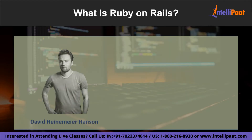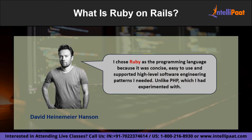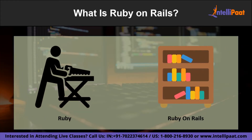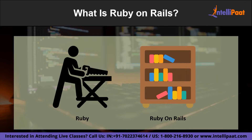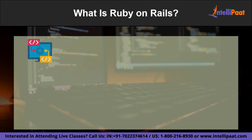David Heinemeier Hansson, the creator of Ruby on Rails, said in an interview on the This Developer's Life podcast that he chose Ruby because it was concise, easy to use, and supported high-level software engineering patterns he needed — unlike PHP, which he had experimented with before. To illustrate the distinction between Ruby and Ruby on Rails, consider making a bookshelf. Ruby can be symbolized by someone felling trees, cutting wood, carving shelves, and hammering nails. Rails is like an IKEA flat-packed bookshelf — all components have been created and all that remains is for you to assemble them.